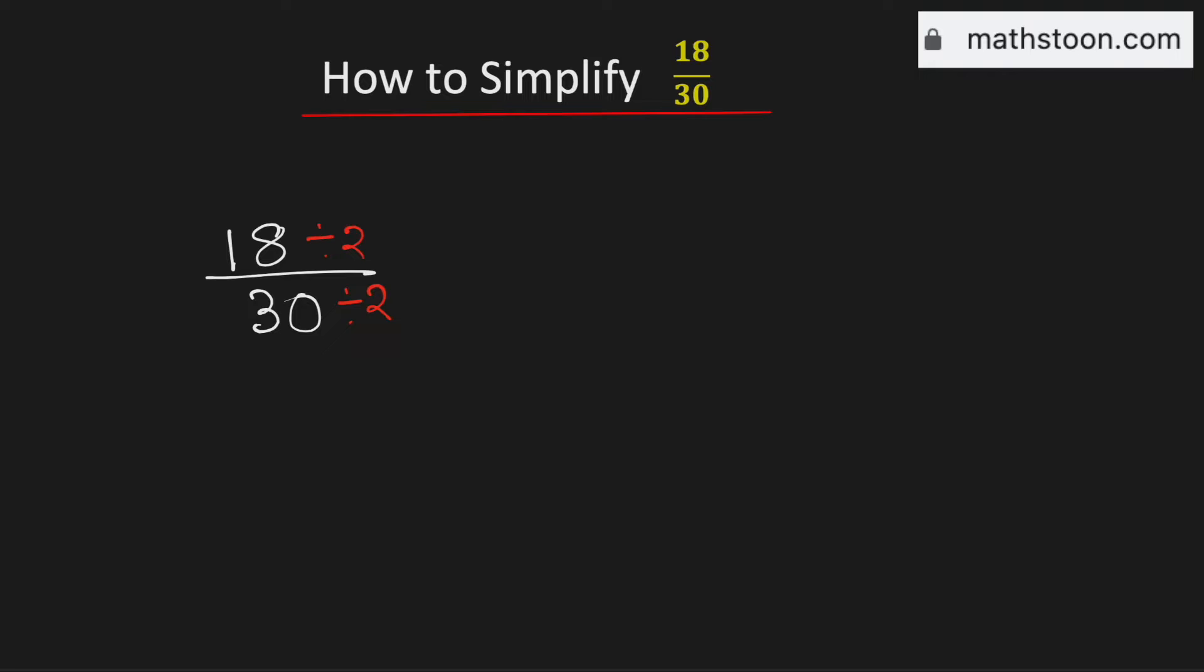We divide by 2 to simplify it. By doing so, we get 9 in the numerator and 15 in the denominator.